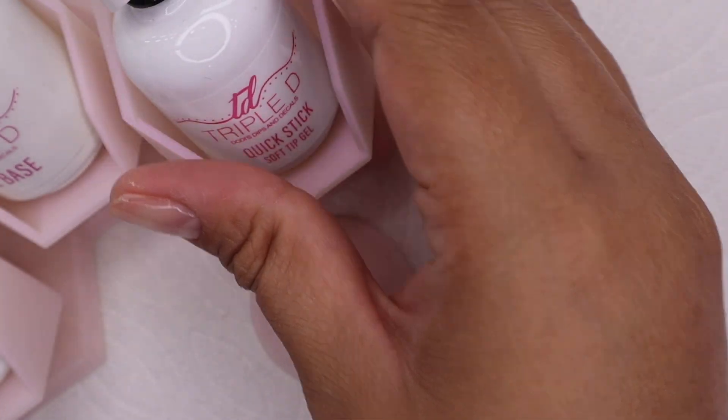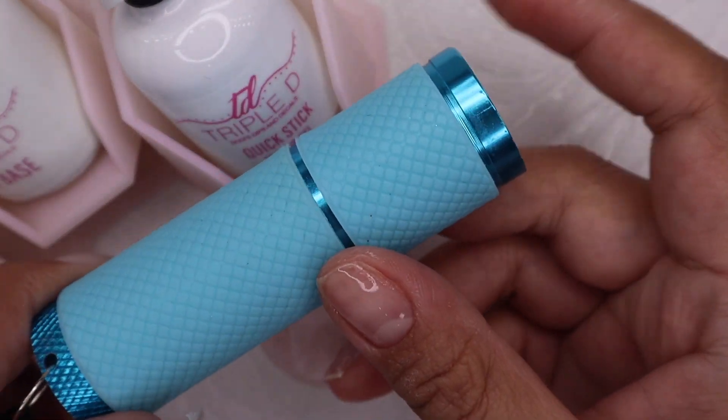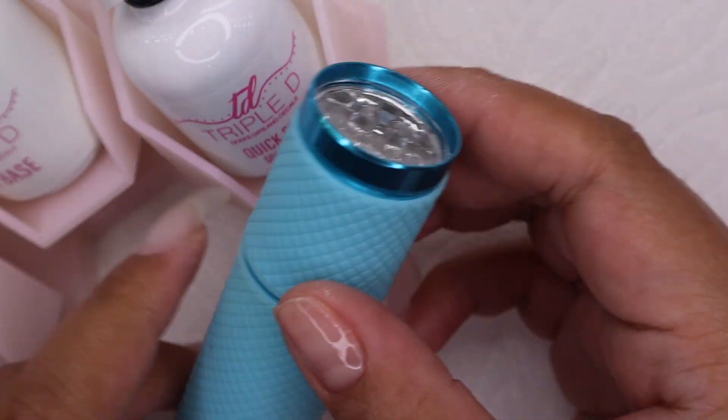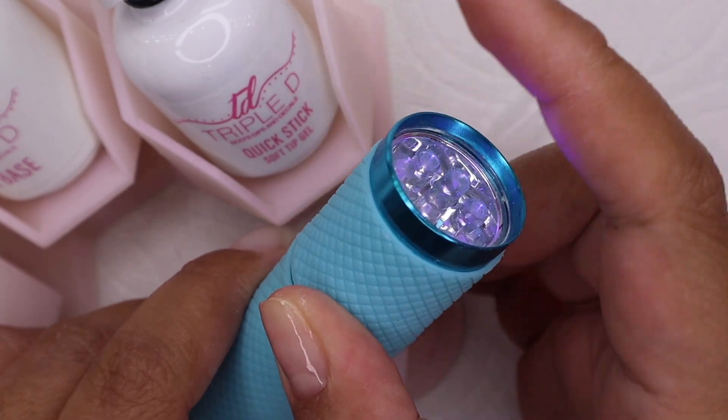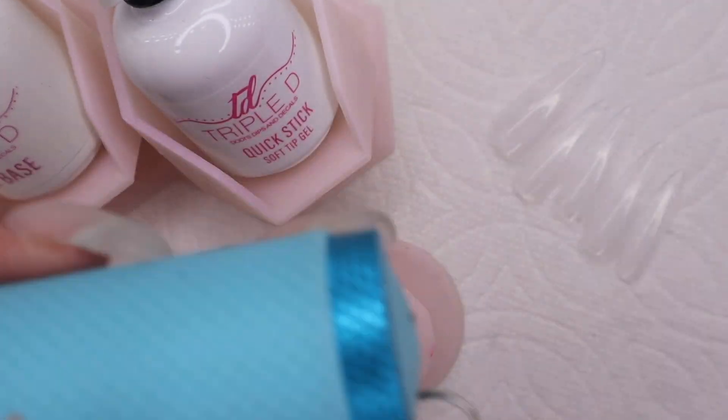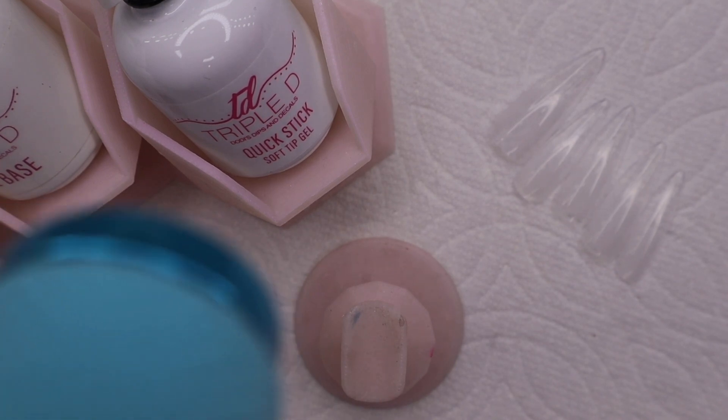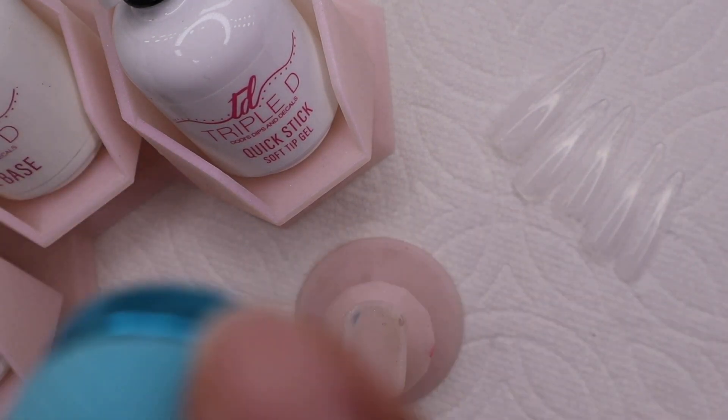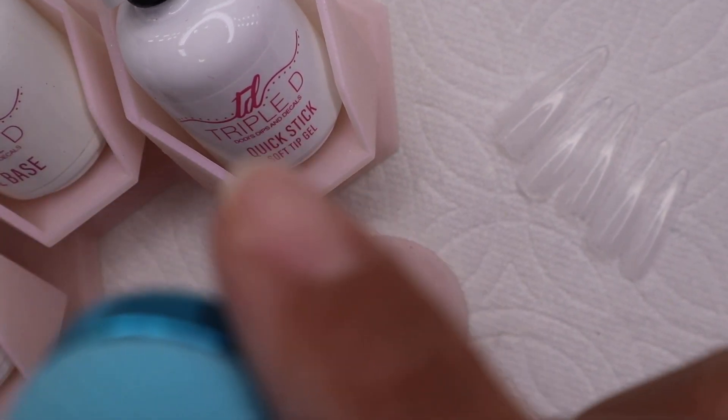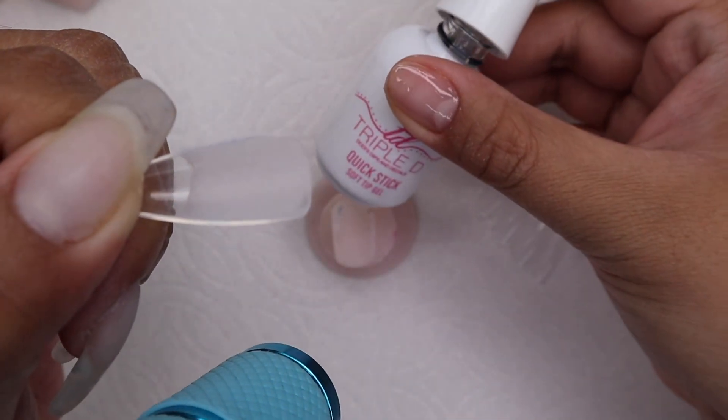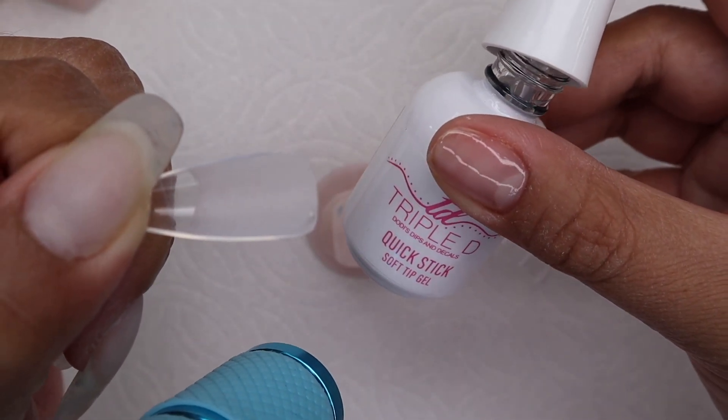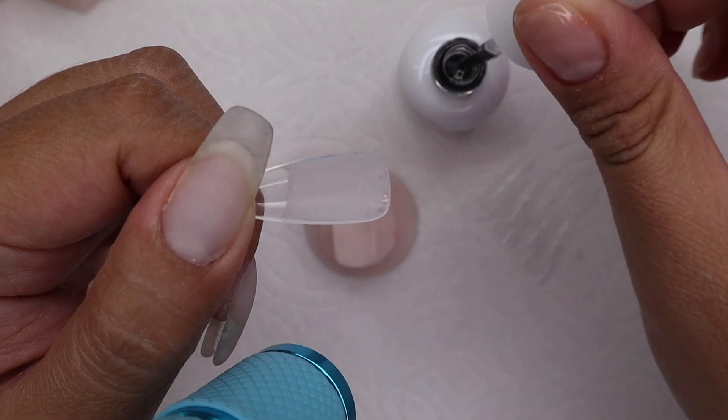After I cured my gel base, I am now going to apply the Quick Stick. I am also going to use this LED flashlight to flash cure my jelly tips. I'm just going to hang it on my camera so that it's easier and I don't have to hold it. Then I am going to apply the Quick Stick on my jelly tips.